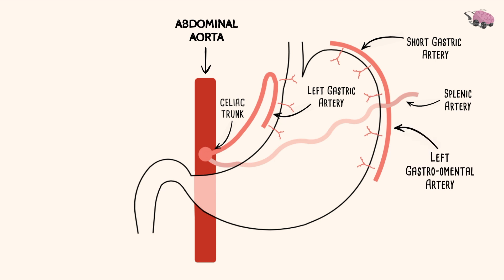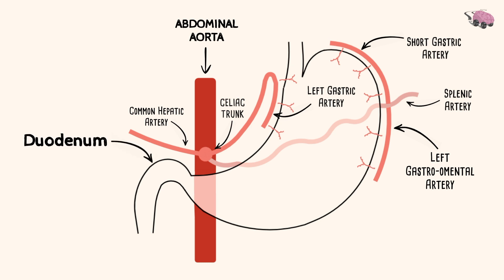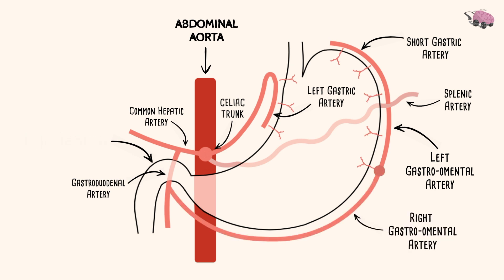The last branch is the common hepatic artery. Just near the duodenum, it branches off into the gastroduodenal artery, going down and behind the duodenum. It then branches into two: the right gastro-omental artery going along the greater curvature of the stomach, meeting with the left gastro-omental artery.